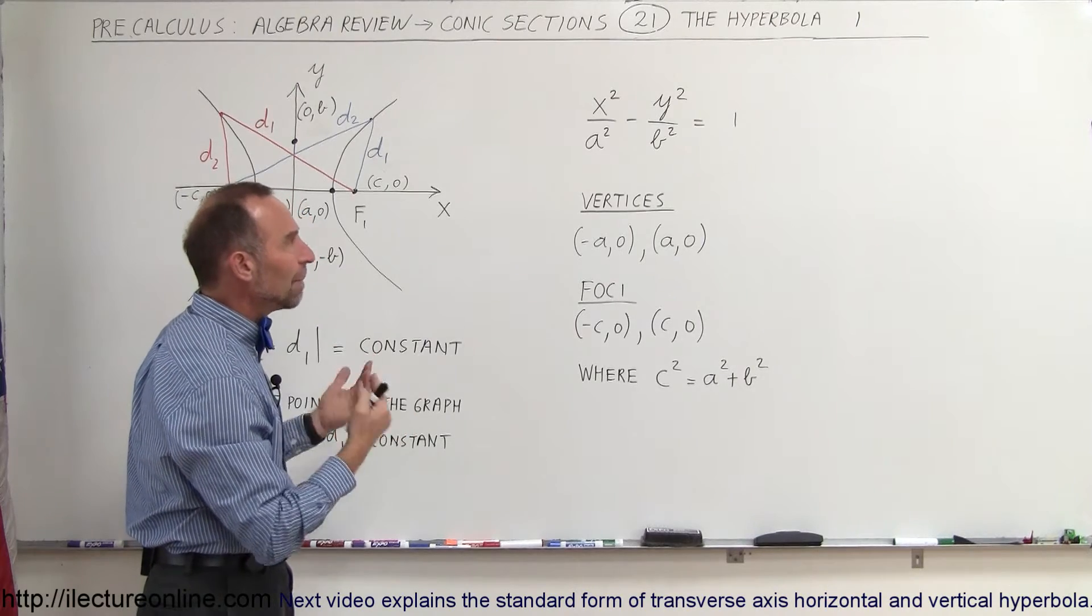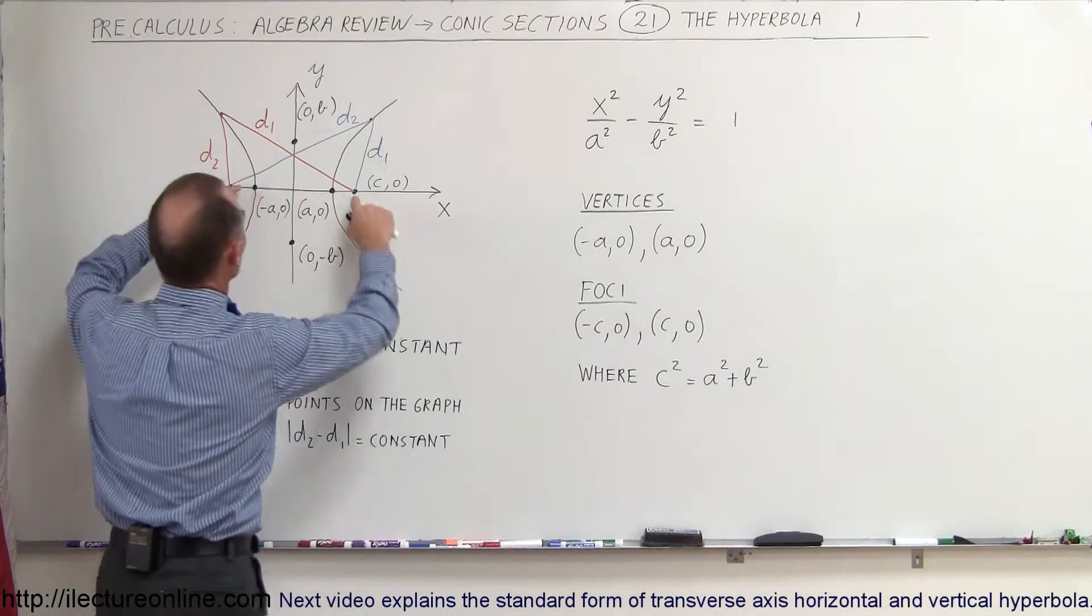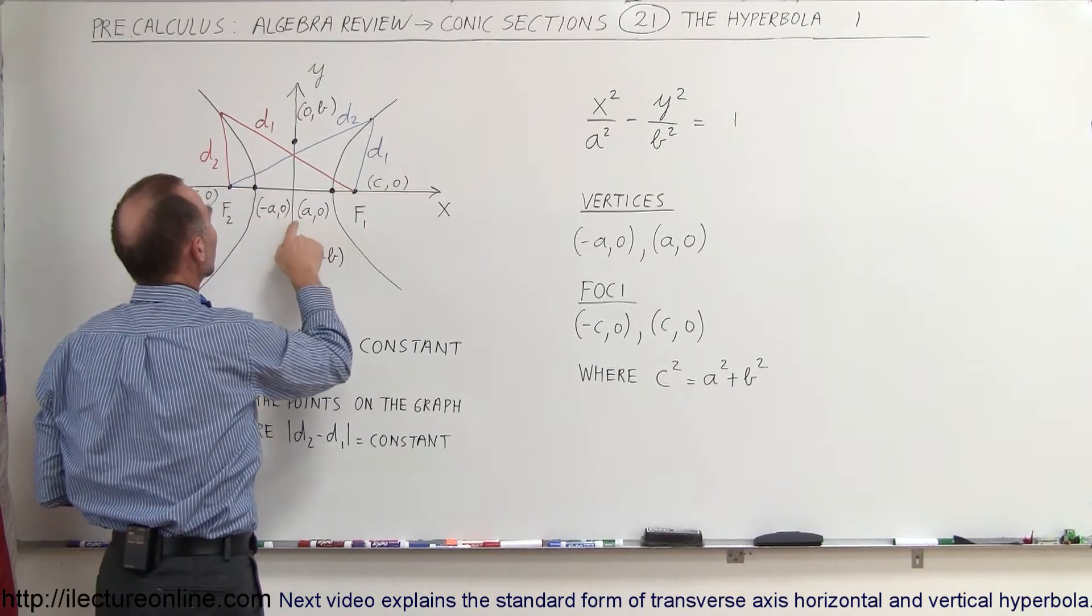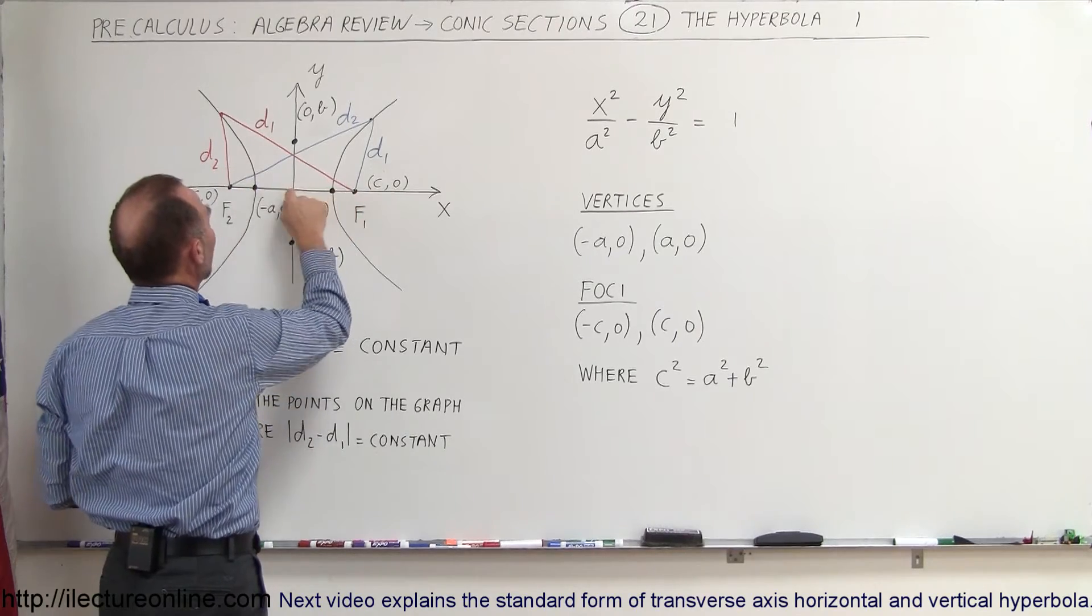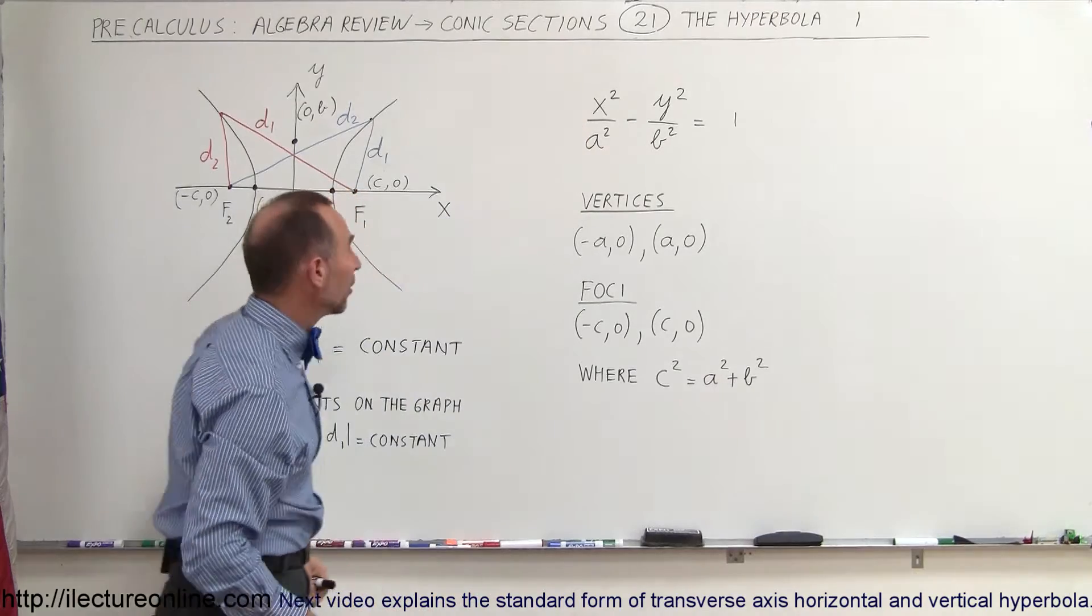The vertices, which are the points that are closer to the origin of the hyperbola, are (-a,0) and (a,0). So those points are distance a away from the origin and that's the number squared below the x variable.